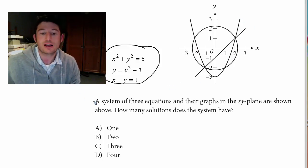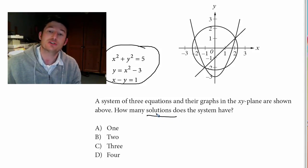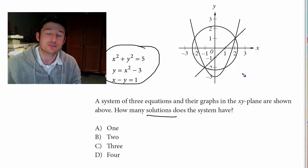And if it wants to know how many solutions there are, all we're looking for is where all three of those things intersect. So how many spots on there do all three of those things intersect?